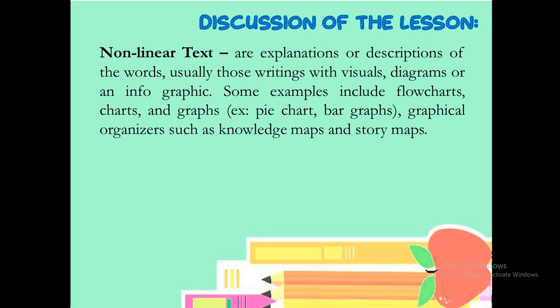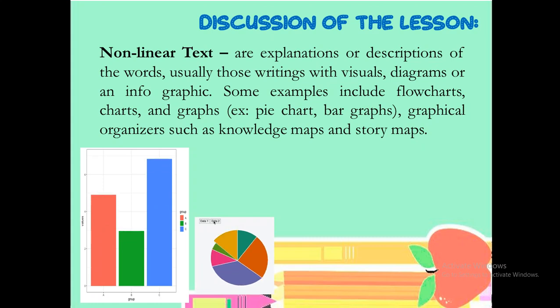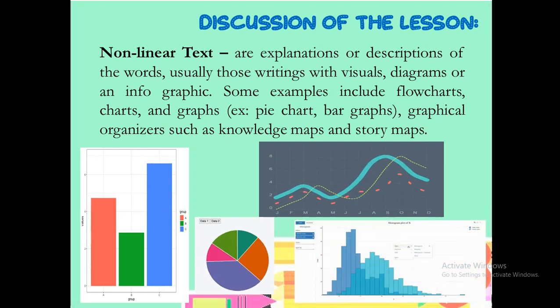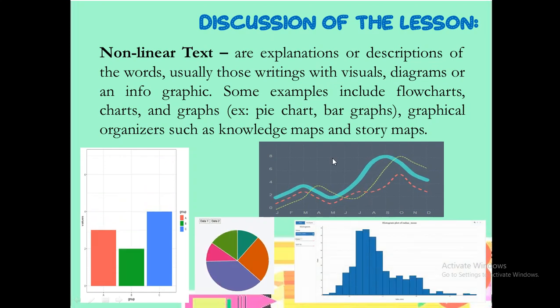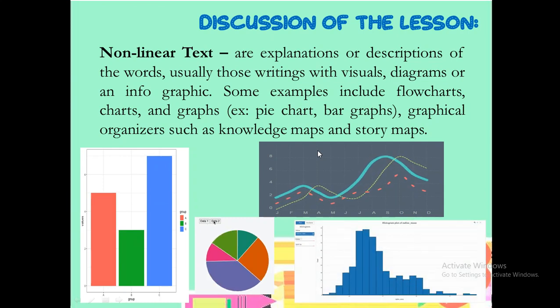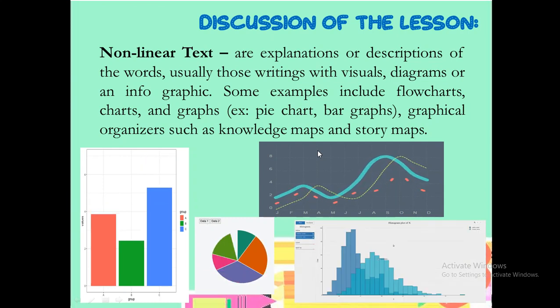The first one would be the non-linear texts are explanations or descriptions of the words, usually those writing with visuals, diagrams, or an infographic. Some examples include flowcharts and graphs like pie chart, bar graph, or any other related to graphical organizers such as the knowledge maps and story maps. This would be the example of the non-linear texts aside from maps and the flowcharts that we will be discussing in the succeeding part of the module that will aid you in understanding the texts.